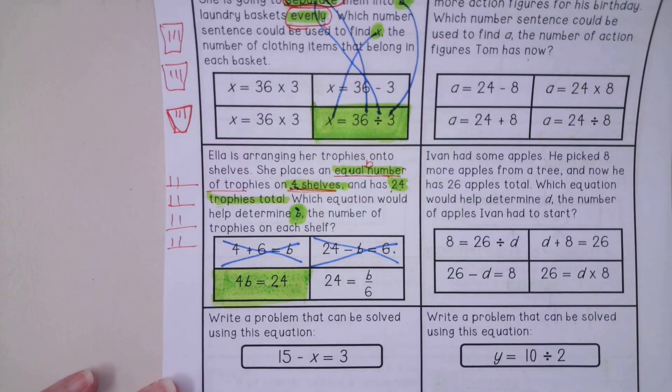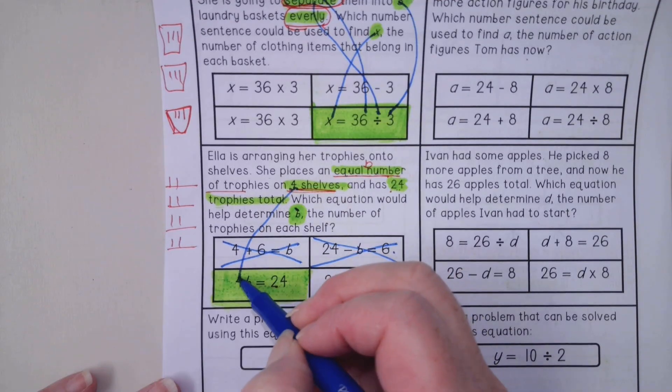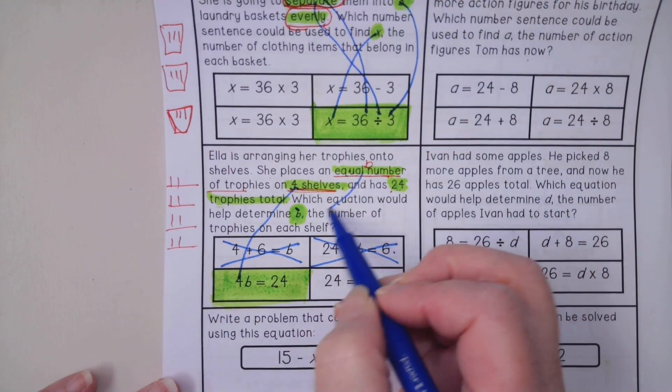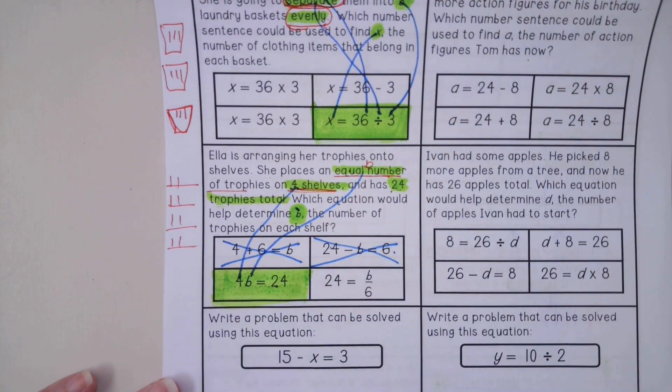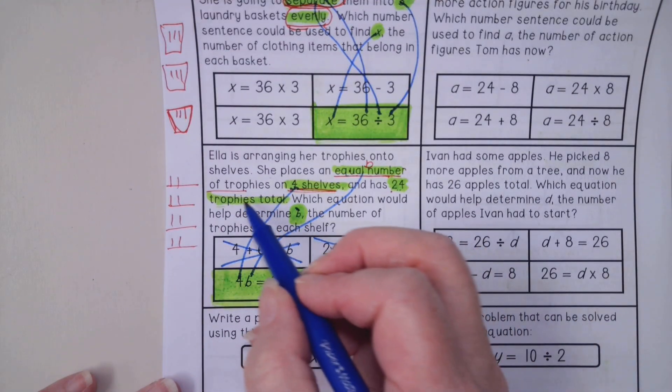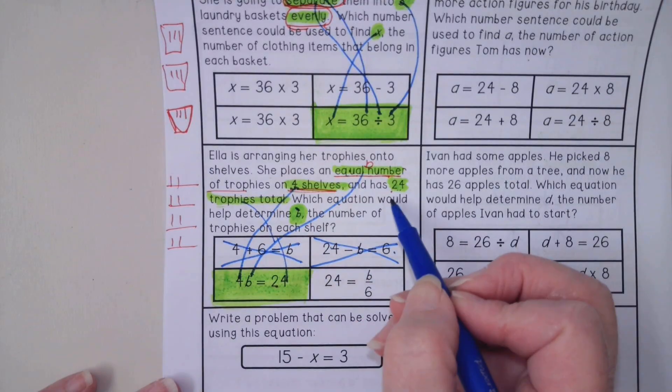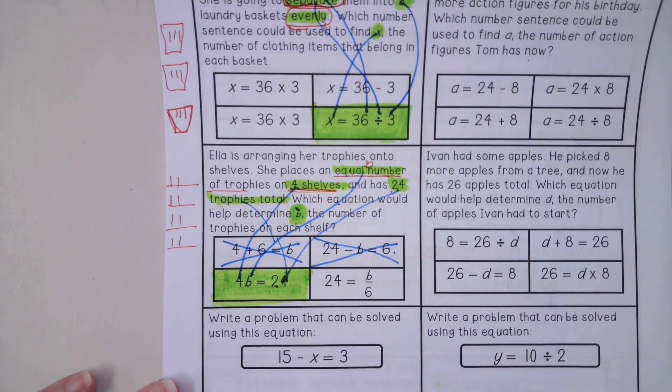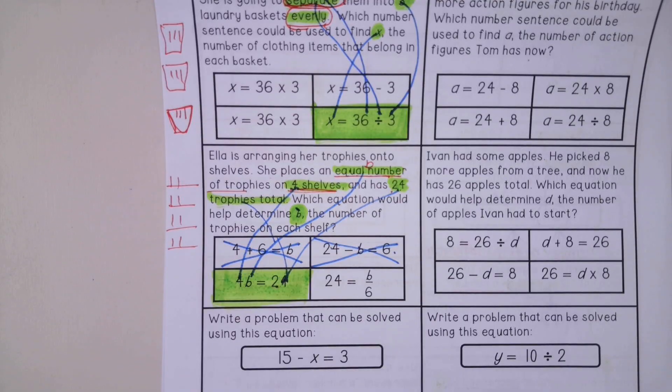So this makes sense that it would be 4b, four times 24. I have my four for the number of shelves. I have my unknown number of items I put on the shelves. And we know the total amount is 24. I know that looks pretty crazy and lots of lines, but that's how I have to figure it out sometimes.